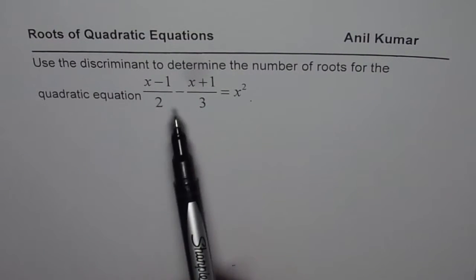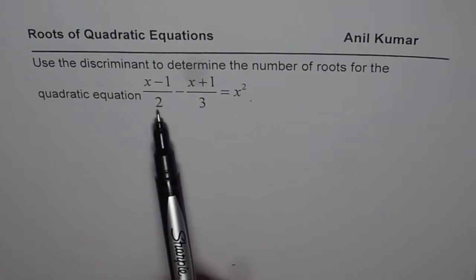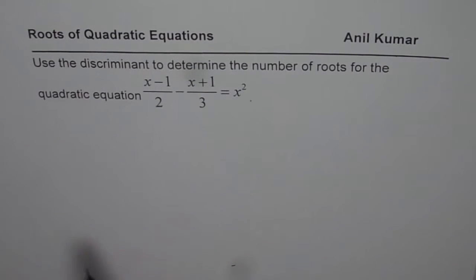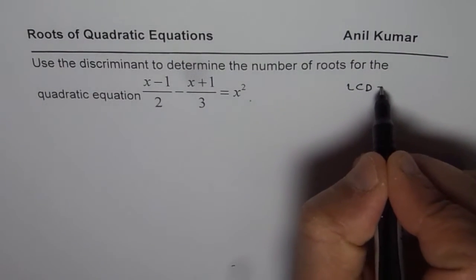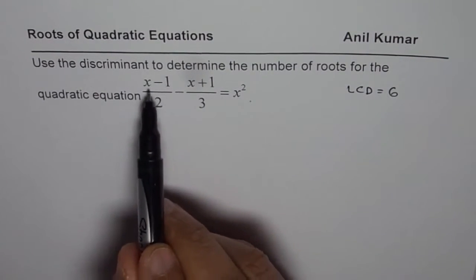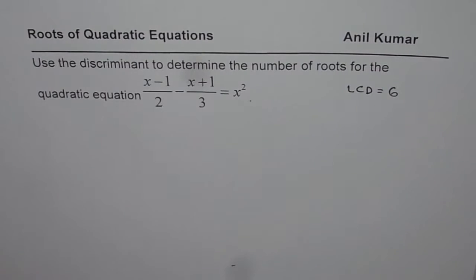Now let us write it in proper form. We have fractions where denominator 2 and 3. In this case, lowest common denominator is 6. So if I multiply every term by 6, I will get rid of fractions. So that is the first statement.